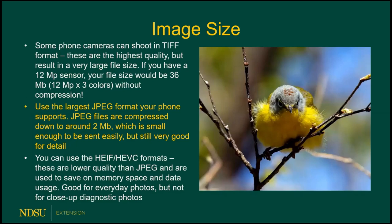Let's talk about image size and file size, which is really important for your iPhone or Android phone. Some cameras can shoot in TIFF format — tagged image file — which is the very highest quality. With a 12-megapixel sensor, the file size would actually be 36 megabytes: 12 megapixels times one byte per color channel. That's a big file. The limiting factor of phones is they don't have near the storage space of a laptop. Also, 36 megabytes is too big to send — here at NDSU, even on our campus email system, 25 megabytes is the largest file we can send. So there has to be some kind of a compromise.